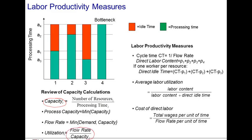Now consider the following process. Imagine I have four stations, each staffed with one worker. The processing times are shown in this picture in green. You see that station one has a shorter processing time than station four. Consequently, given that there is one worker at each station, station four is our bottleneck. Since station four is slower than stations one, two, and three, those stations have some slack time relative to our bottleneck. We refer to this slack time as idle time.